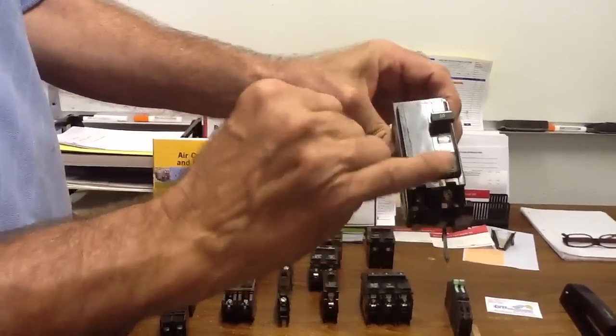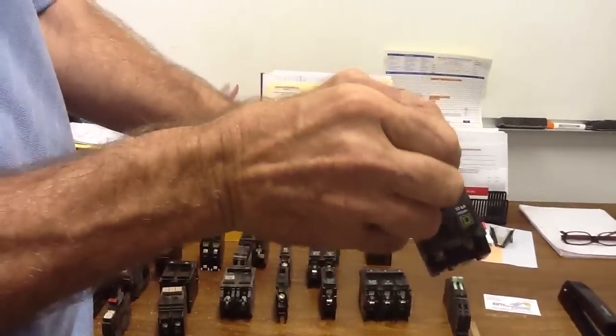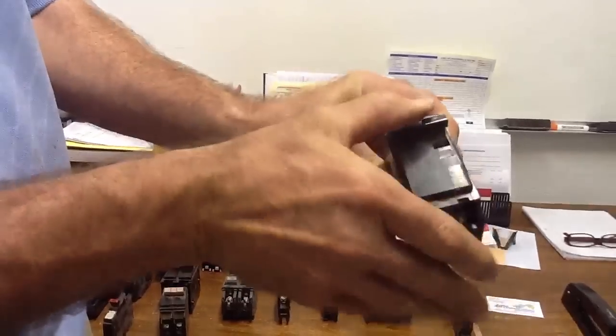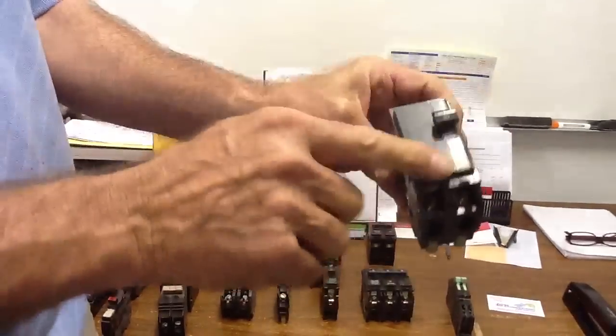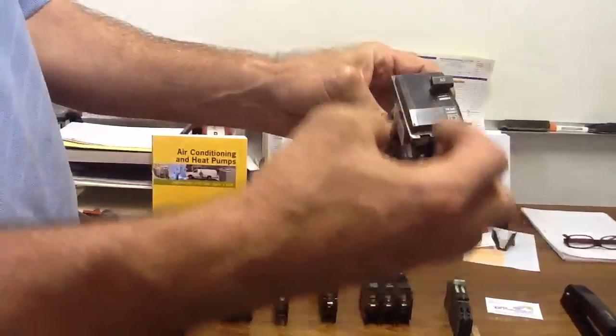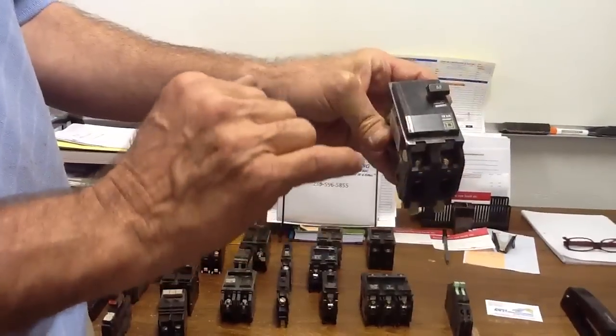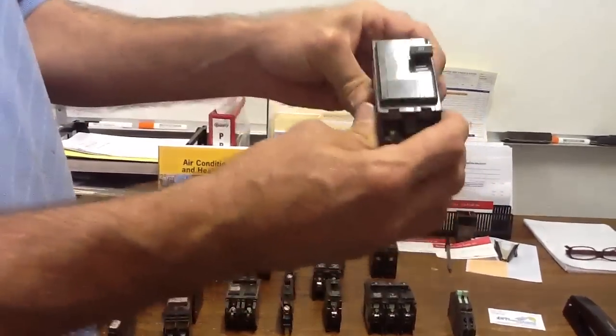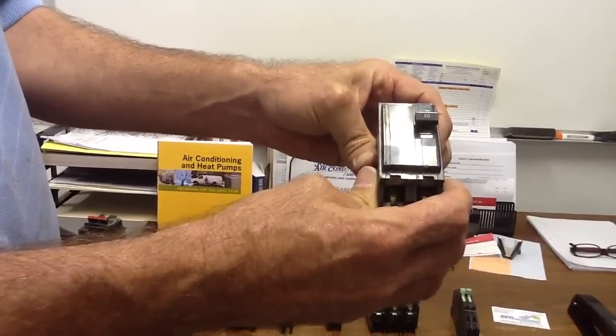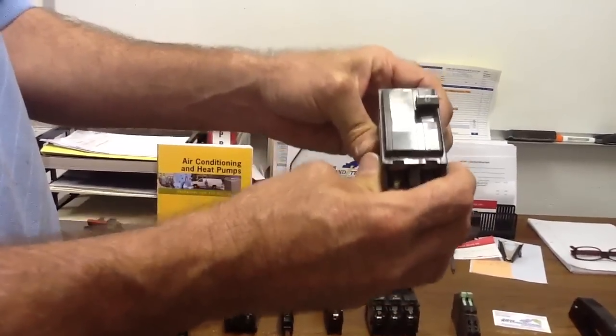The next breaker is, this is what we call a Square D QO. And actually, QO means quick off. They have the fastest tripping breaker on the market. That's why you pay for the Square D brand, because you actually get the money that you're paying. This is a great breaker. As far as I'm concerned, this is the top of the line on the market. In fact, this is what we at Jones Air Conditioning and Electrical use for our companies, only Square D products.